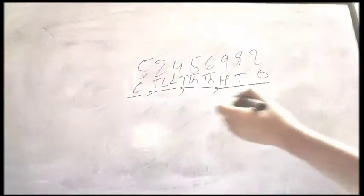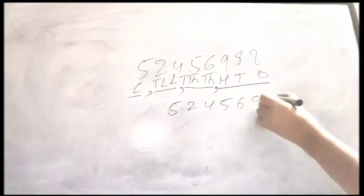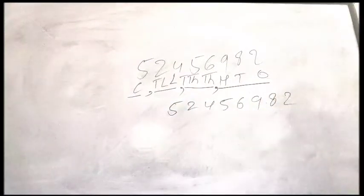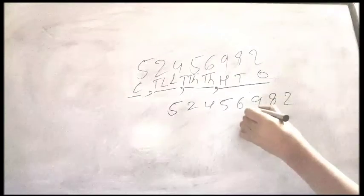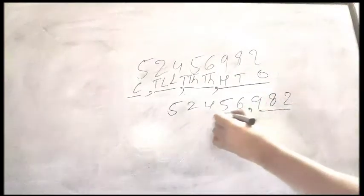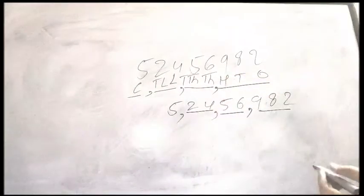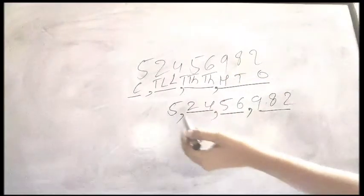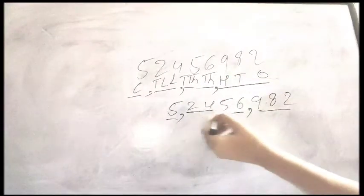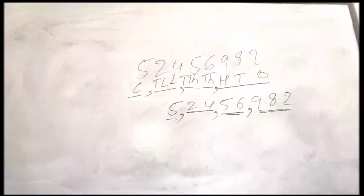Is that clear? So we will rewrite the number again with suitable commas according to the Indian number system. The commas first come before 3 digits, then every 2 digits. So it can be recognized easily — it is 5 crores, 24 lakhs, 56,982. This is the Indian number system.